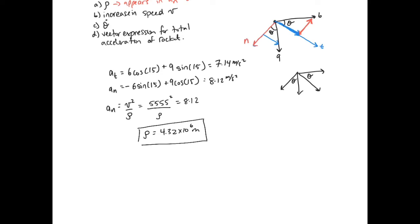The second question asks for the increase in speed. The increase in speed comes from the tangential acceleration. Since a_t equals dv over dt, the answer is simply 7.14 meters per second squared. We don't have to calculate anything else — the tangential acceleration is the increase of speed.